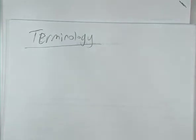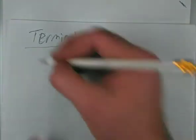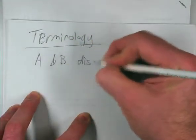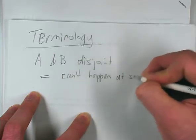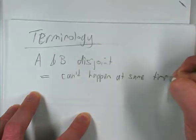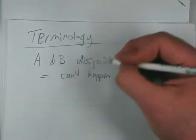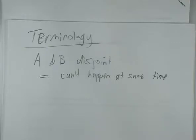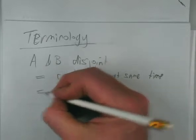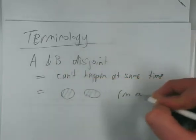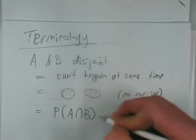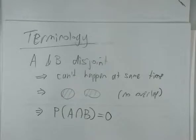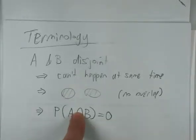Some important terminology: disjoint means they can't happen at the same time. In the Venn diagram that means the two circles don't overlap at all. In terms of probabilities, disjoint means that P(A and B) equals zero — it's impossible for them to happen simultaneously.